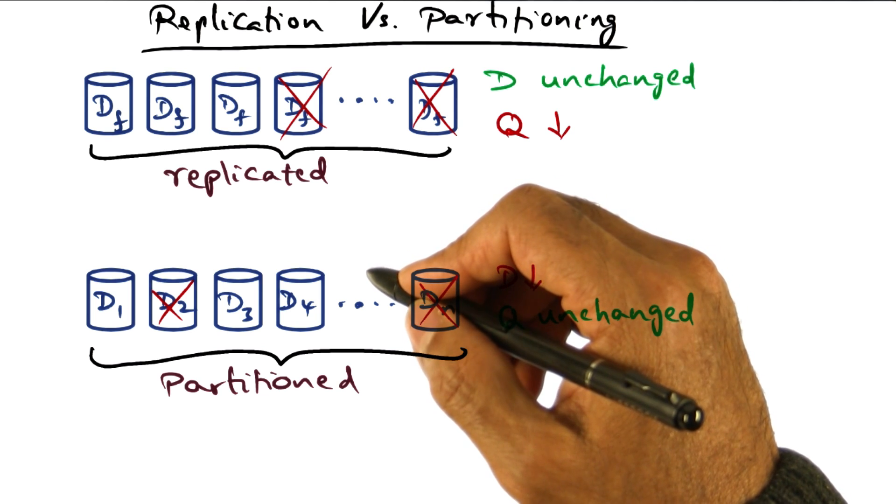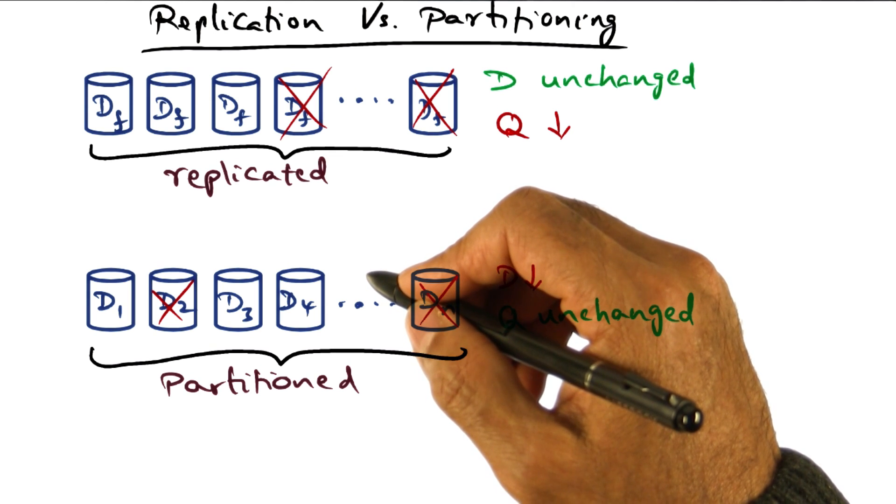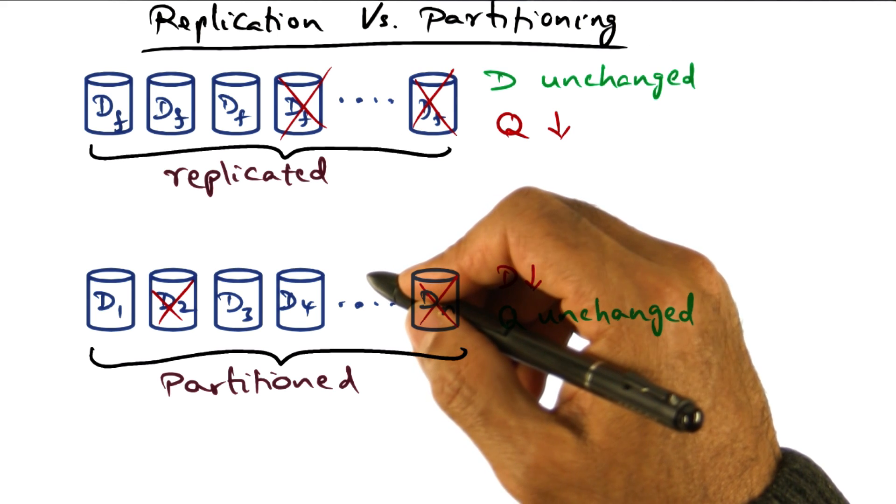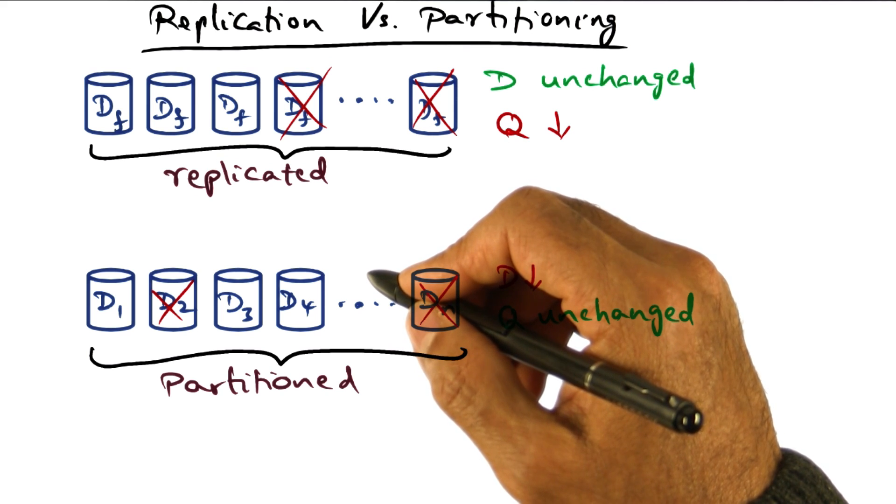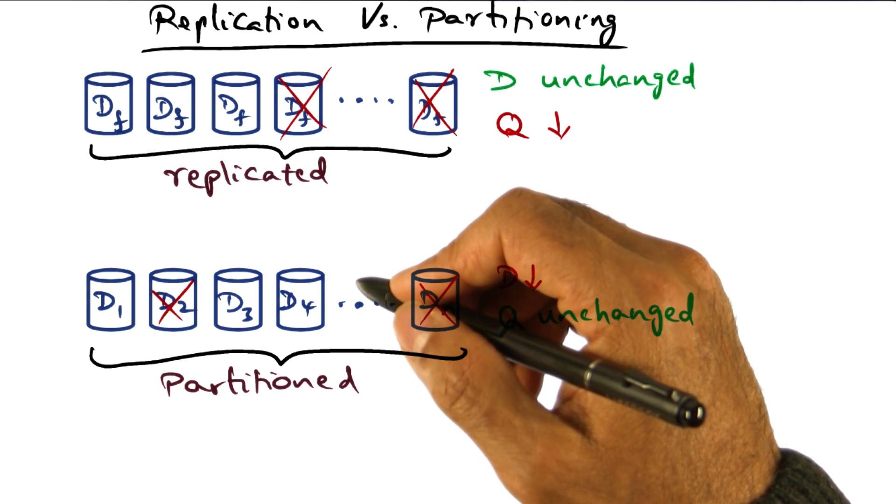Take for instance, you're accessing your email through the internet. You would rather put up with a service being unavailable for some amount of time, rather than seeing that you only have access to a portion of your mailbox. And that's the reason why replication beyond a certain point is better for dealing with giant scale services.